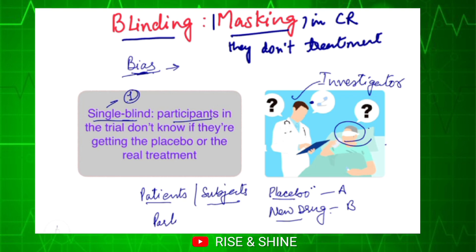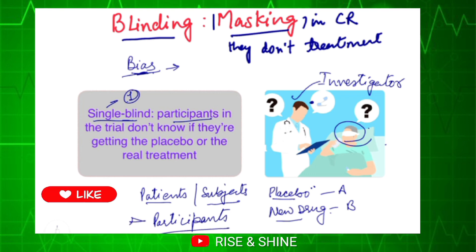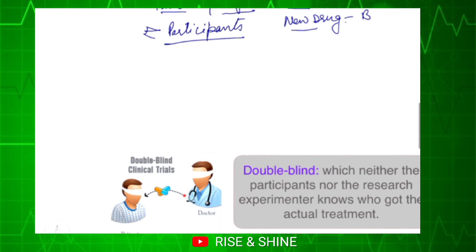So, single blind means one party — the patient, subject, or research participant — is blinded. These terms are used interchangeably: patient, subject, and research participant, with 'participant' being the best term. The patients don't know their treatment, but the researchers, investigators, or doctors do know.